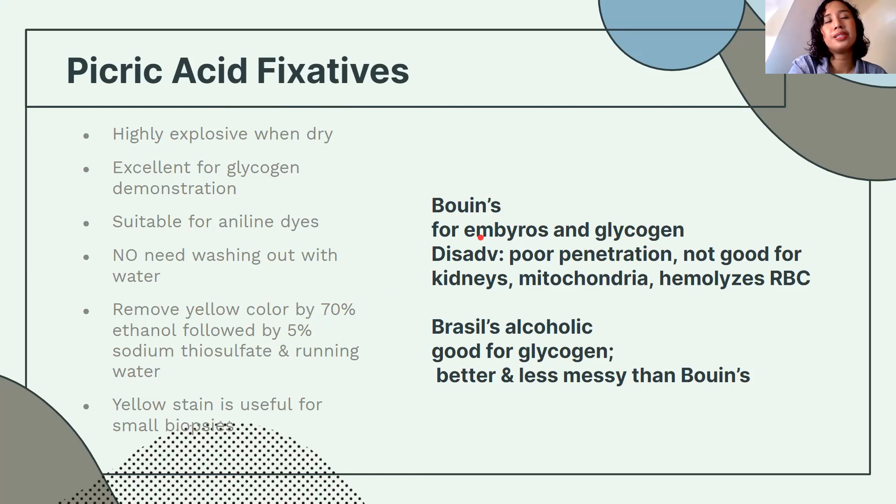Bouin's disadvantages: poor penetration, not good for kidneys, mitochondria, or hemolysis. Brasil's is less messy than Bouin's and is also used for glycogen. In summary, picric acid fixatives are used for glycogen demonstration.